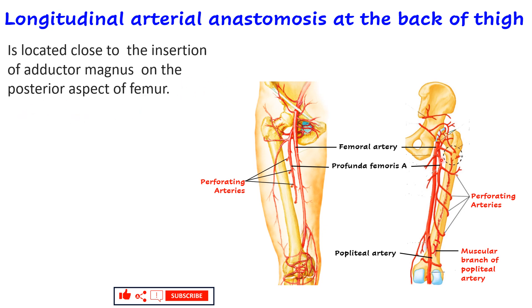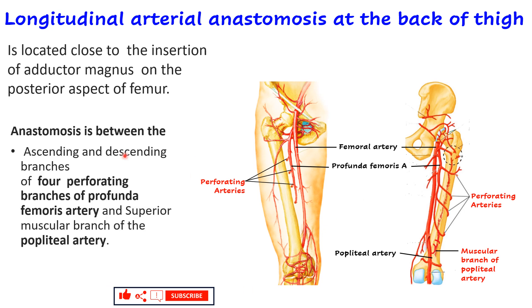This is because the perforating arteries pierce adductor magnus there. The anastomosis is between the ascending and descending branches of the four perforating branches of the profunda femoris artery. The descending branch of the first perforating artery anastomoses with the ascending branch of the second perforating artery, and so on through to the fourth.